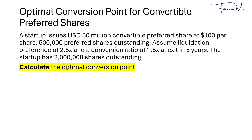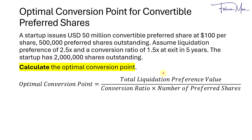First we calculate the optimal conversion point. The optimal conversion point equals the total liquidation preference value divided by the conversion ratio times the number of preferred shares. To get the total liquidation preference value, we take the liquidation preference multiple of 2.5 times, multiply by the value of the preferred shares at issuance of $50 million, then divide by the number of common shares upon conversion, which is 1.5 times 500,000.